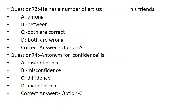He has a number of artists dash his friends. Option B: BETWEEN. Option C: Both are correct. Option D: Both are wrong. He has a number of artists AMONG his friends. Option A is the correct answer.